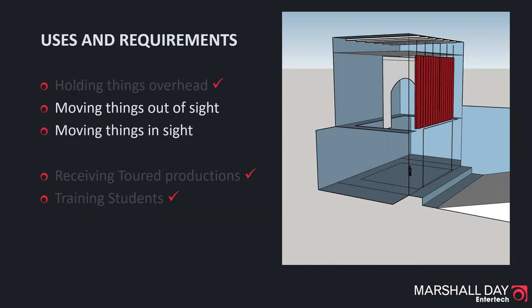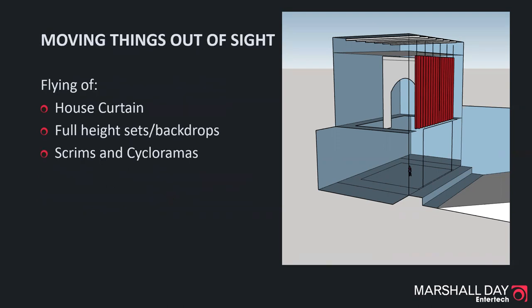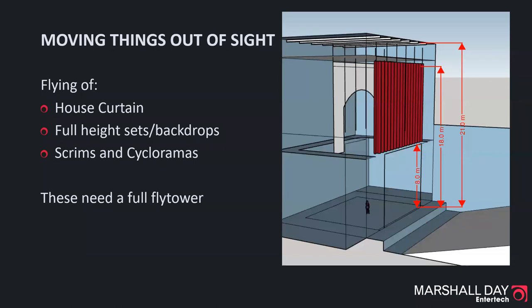The model we've been looking at shows our house curtain and a full-height set piece both being flown right out of sight of the audience. This is a pretty common need, and it demonstrates clearly when and why you'll need a full-height or full-drift fly tower. So what exactly does this mean in terms of how high the tower needs to be? Intuitively you might think you just need a tower twice as high as the proscenium opening to fly something the same size out of sight, but in fact the tower needs to be considerably higher than that to be full drift.